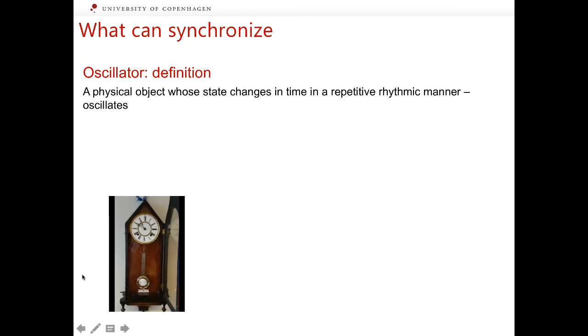Oscillation is a motion that shows some degree of repetition. Oscillations occur in physical systems called oscillators. Here we introduce a definition of an oscillator. An oscillator is a physical object whose state changes in time in a repetitive, rhythmic manner – oscillates.